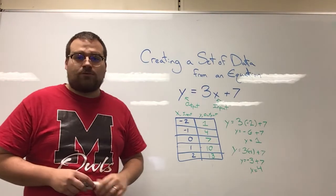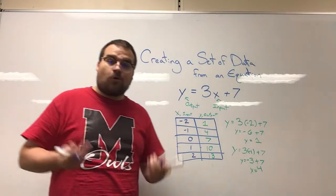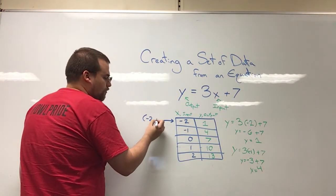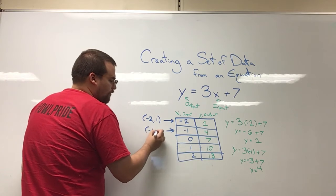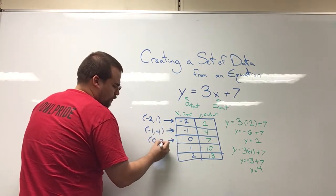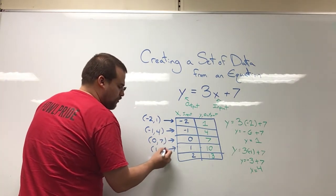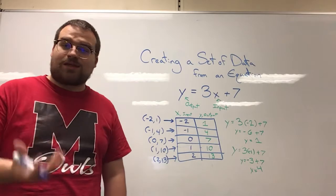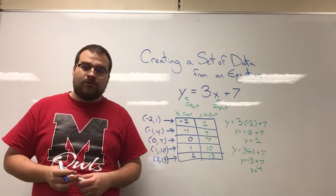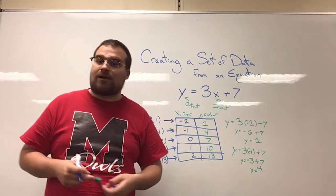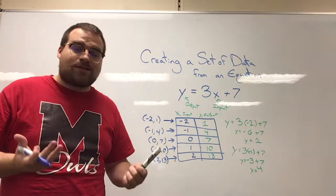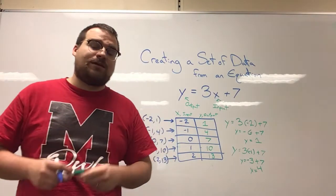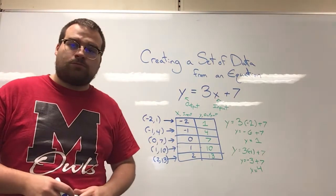I should mention one last thing before we end: every one of these parts of a data set are actually coordinates that you could graph. This right here is a coordinate: negative 2, 1. This is a coordinate: negative 1, 4 — and so on. If you were to actually graph these coordinates and then connect the dots, you would successfully graph the line of the equation you're working with. If I put all of these on a coordinate plane, on graph paper, and drew a line through them, that's the same line I would get from electronic graphing software. I can graph any given line by creating this data table and using the values as coordinates.